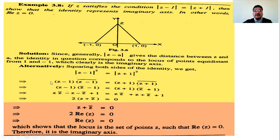We also use the property that (Z₁ - Z₂)̄ = Z̄₁ - Z̄₂, so (Z - 1)̄ = Z̄ - 1̄. Since 1 is a real number, its conjugate is itself, so 1̄ = 1.